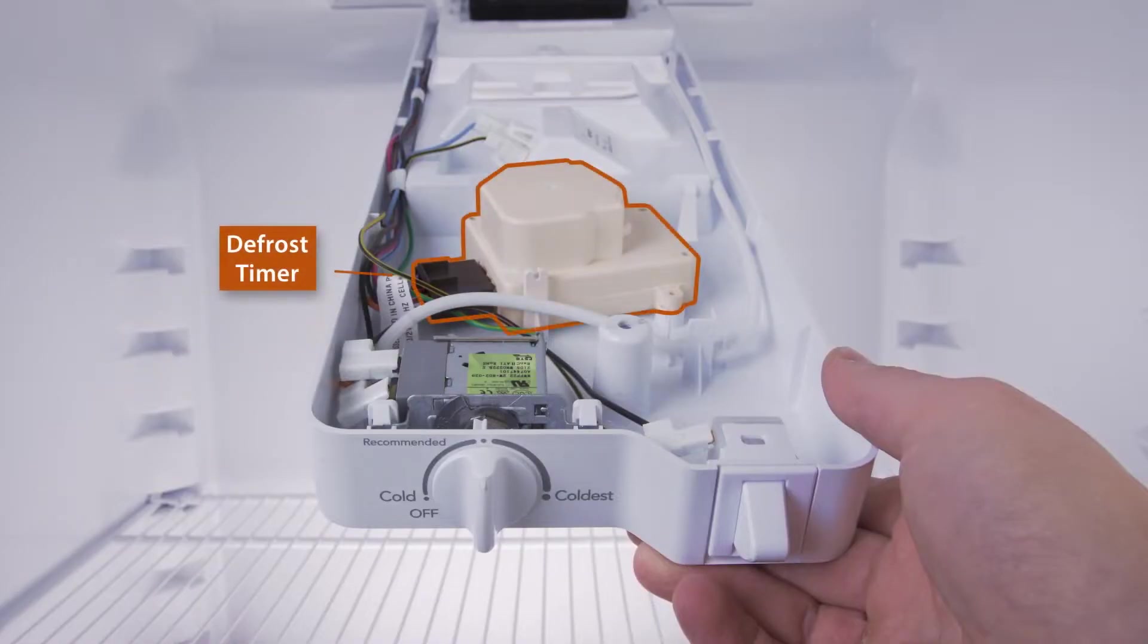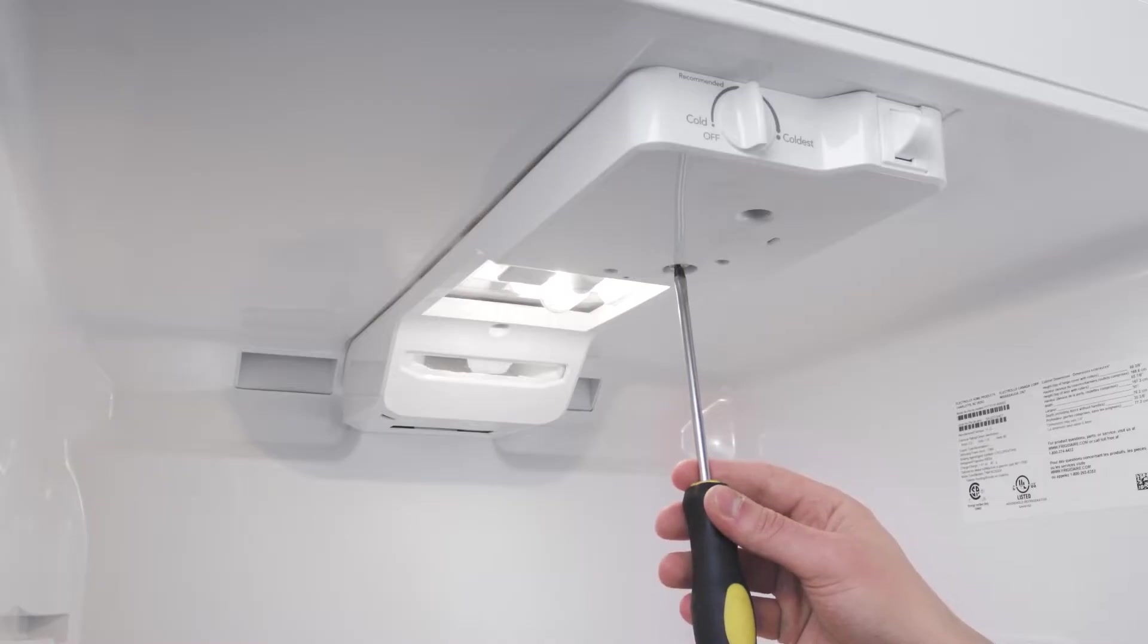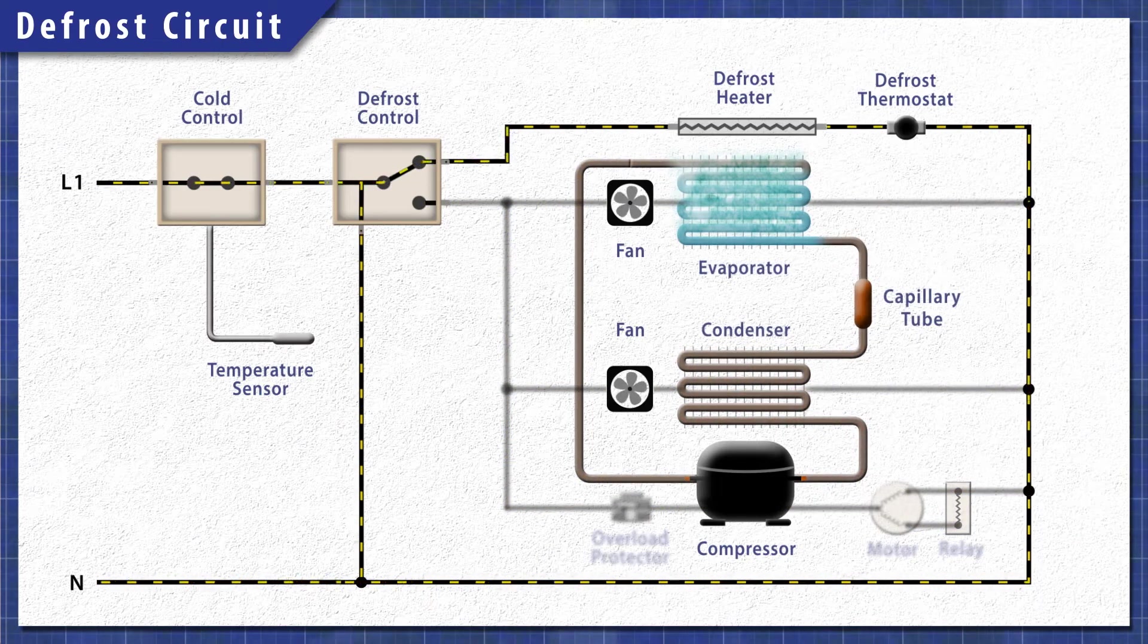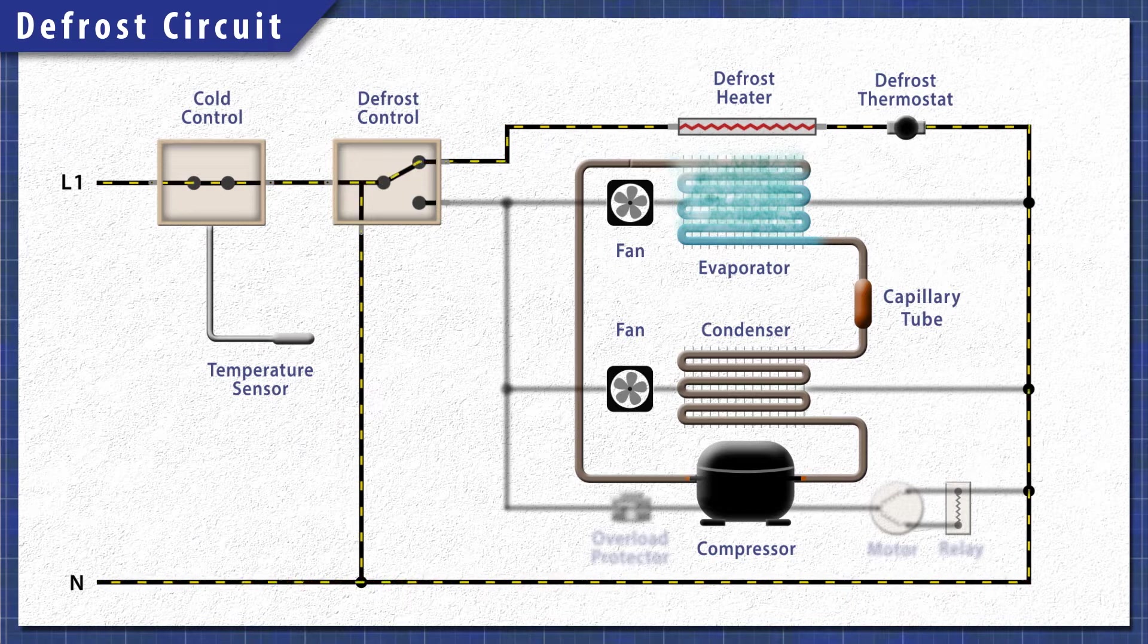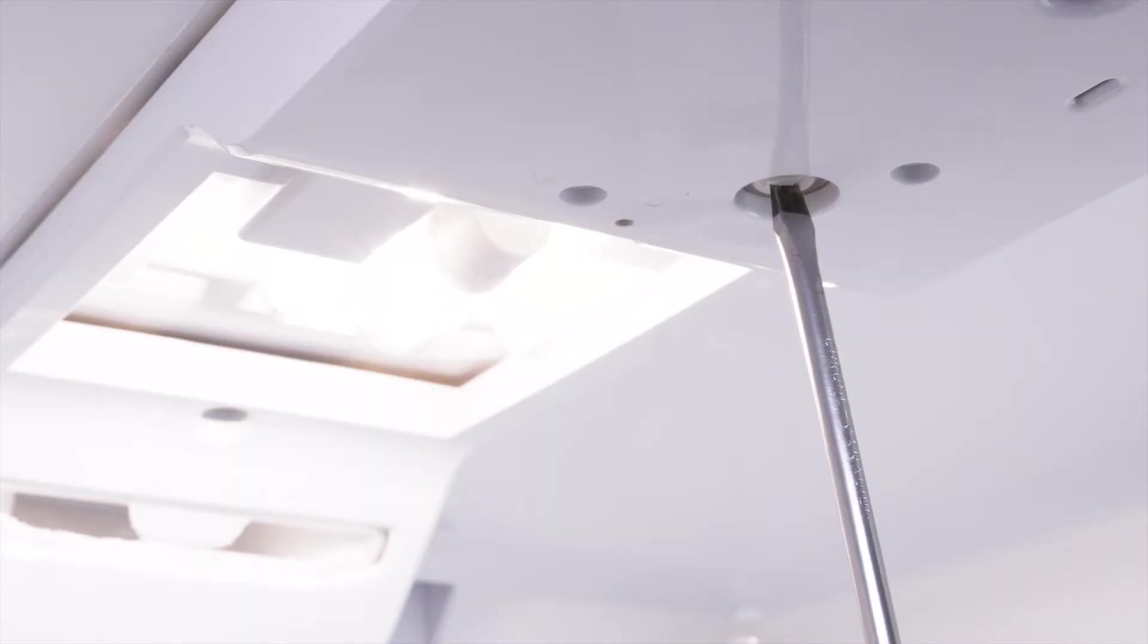It's worth trying to start the defrost cycle manually. Top freezer refrigerators usually have a defrost timer located in the control module. You can use a flat blade screwdriver to turn the screw clockwise until it clicks. The defrost cycle should begin. If the heater warms up, then you've verified that the heating element is good. In this case, the defrost timer is likely faulty and should be replaced. Now, to switch out of the defrost mode and reset the timer, turn the screw clockwise until it clicks again.